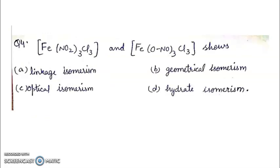Question 4. Two compounds are given: Fe(NO2)Cl3 and Fe(ONO)Cl3. They show A. Linkage Isomerism, B. Geometrical Isomerism, C. Optical Isomerism, D. Hydrate Isomerism. Right answer will be Linkage Isomerism. Because yaha pe nitrogen ke through linking hai aur yaha pe oxygen ke through.